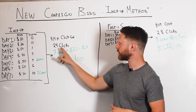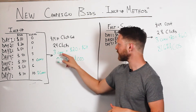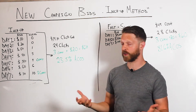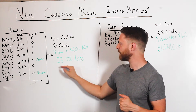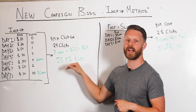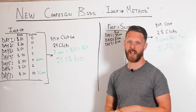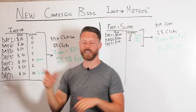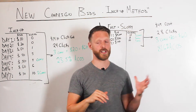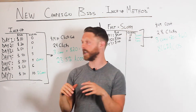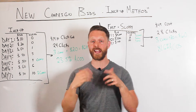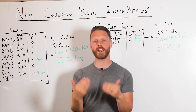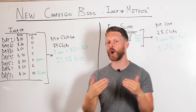I ended up spending only fourteen dollars in clicks, got twenty-four clicks, the same sixty dollars of revenue — except now I did it at twenty-three percent ACoS. In isolation, there are real savings here.